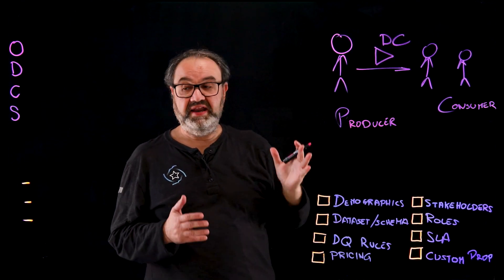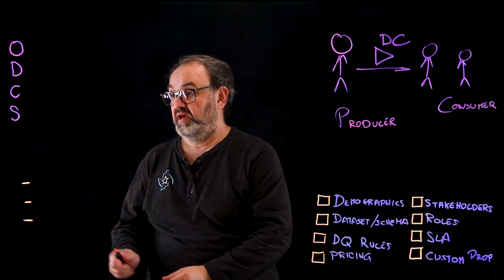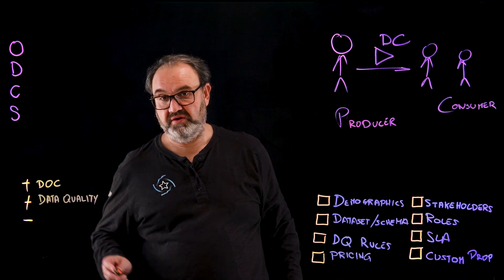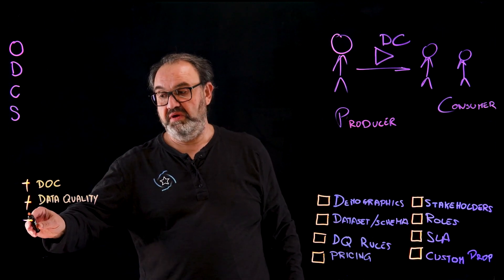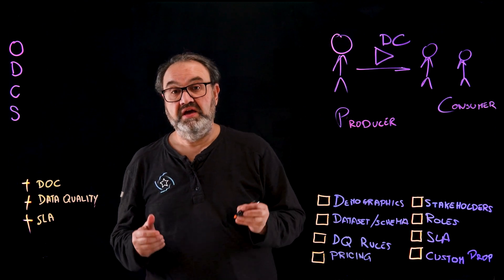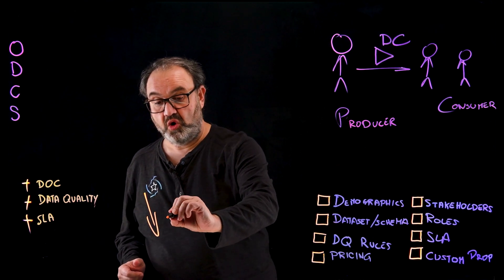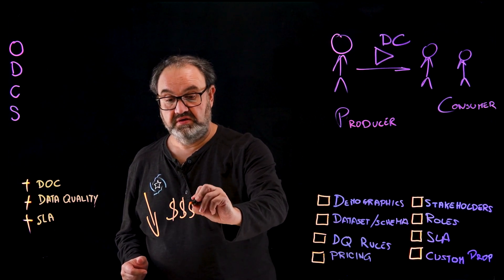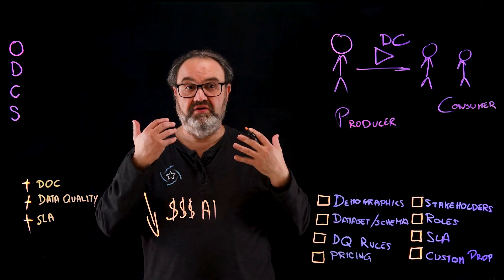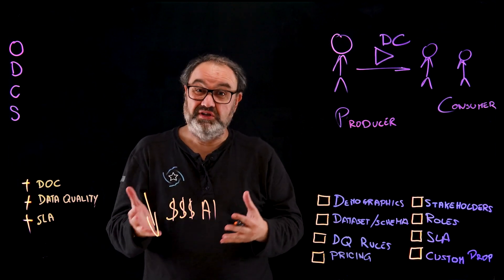Why do we do that? It's because we want better documentation, we want better data quality, and we want better SLAs. And what is the ultimate goal? It's to really lower the cost of AI. You don't have to retrain your models — you get better data in your system, so you don't have the garbage in, garbage out problem.